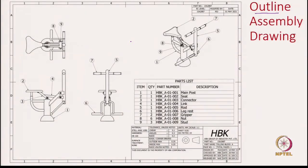In addition to the multi-view and pictorial, we also have additional information on this drawing sheet. As we discussed previously, we have the main title block and the secondary title block. This contains the company owning this design as well as the people who have drafted, designed, and approved this drawing.